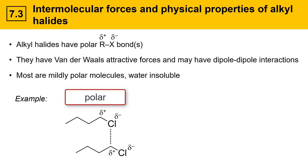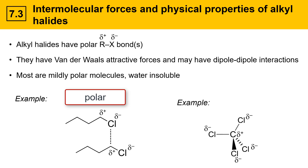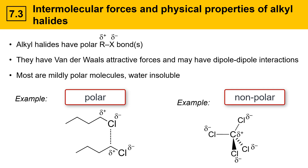Once in a while, alkyl halides will be non-polar if their bond dipoles cancel out perfectly. Carbon tetrachloride was an example of that — it has polar bonds, but is a non-polar molecule overall.